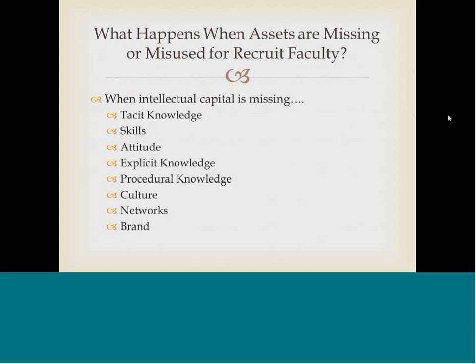What happens when intellectual capital is missing or is misused in relation to tacit knowledge? Let's say we have a top-notch faculty member whose methods of teaching are a little bit different — a slightly different approach to culture, perhaps a different attitude. But the school or the college decides they're not comfortable with that faculty member's behavior, so they do not retain that faculty member. The faculty member's tacit knowledge is then lost to the university.